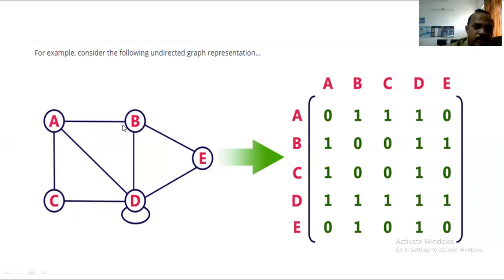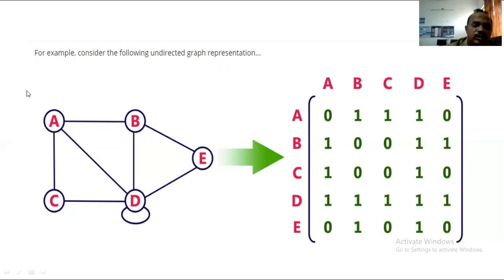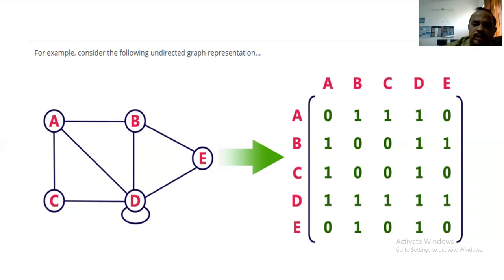In this example with five nodes, we get a 5×5 matrix with columns A, B, C, D, E and rows A, B, C, D, E. For A to A — no connection, write 0. For A to B — there is a link, write 1. If there is an edge, write 1; if there is no edge, write 0.